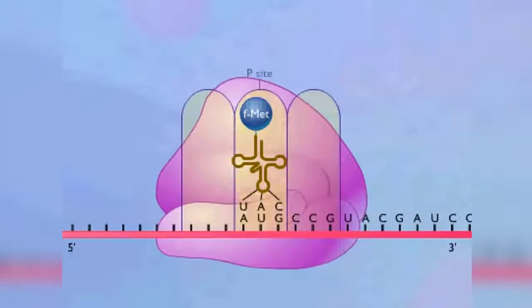One is called the peptidyl, or P-site, and the other is called the acceptor, or A-site. There is also a third site called the exit, or E-site, where transfer RNAs are released.